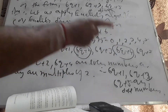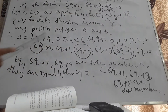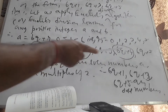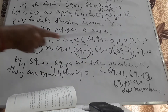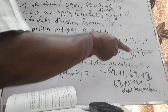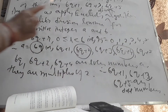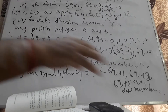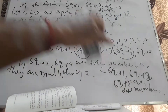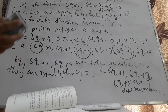Out of these numbers, 6Q, 6Q+2, and 6Q+4 are even numbers as they are multiples of 2. Therefore 6Q+1, 6Q+3, and 6Q+5 are odd numbers. Therefore any positive odd integer is of the form 6Q+1, 6Q+3, or 6Q+5. That is the final conclusion.